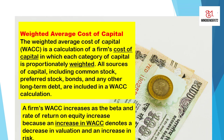We know the capital structure of a company normally comprises three categories: the common stock, the preferred stocks, and the bonds or any other long-term debt. Weighted Average Cost of Capital is basically a proportionately weighted capital cost of each of these categories.